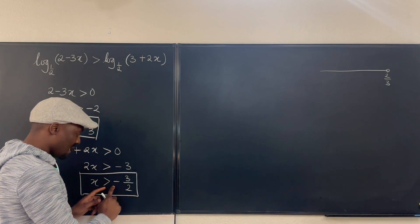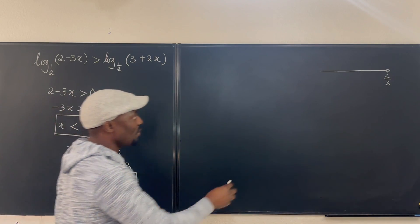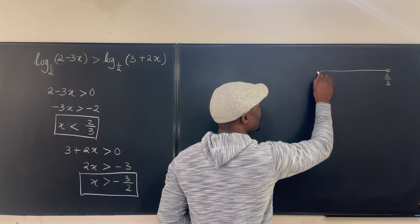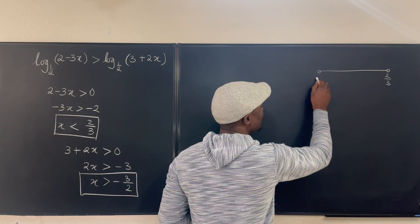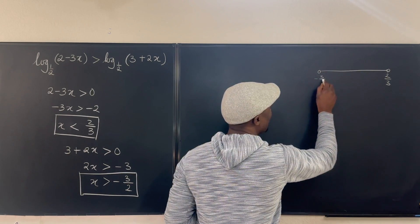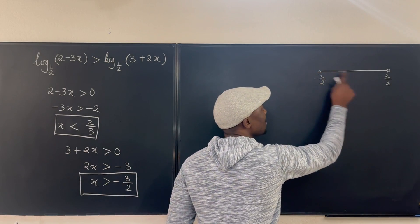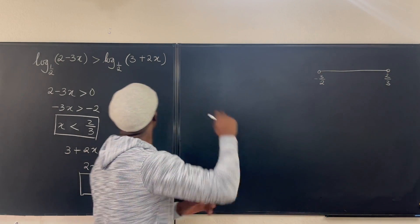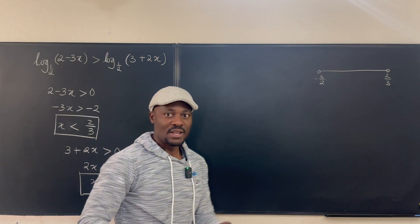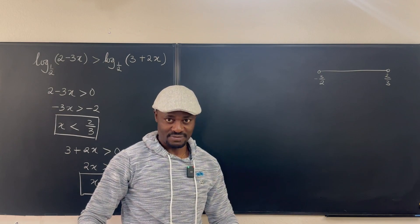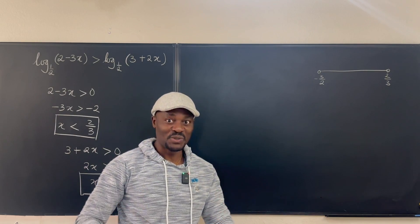And x is greater than negative 3/2. So let's put negative 3/2 here. It's also a hole and it's negative 3 over 2. x is greater, so everything between here and here, if you plug it into this inequality, you'll be fine. There'll be no problem. Okay, the functions will both exist.